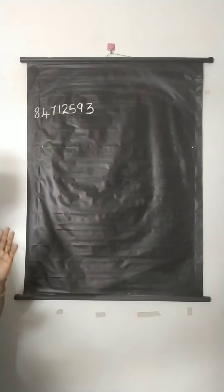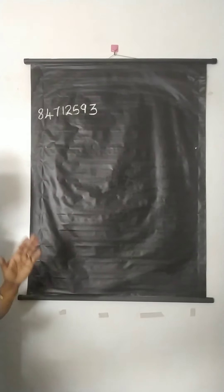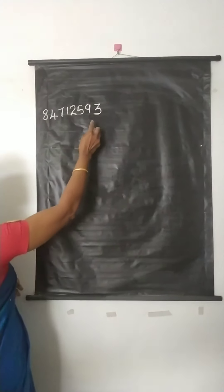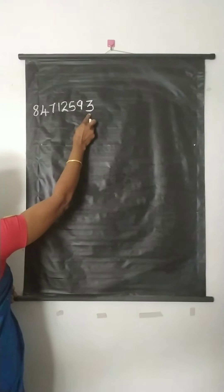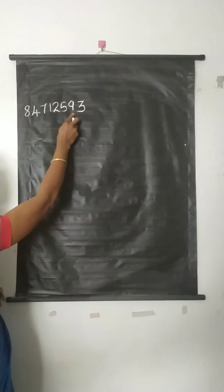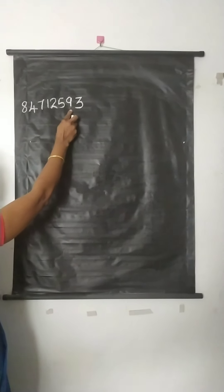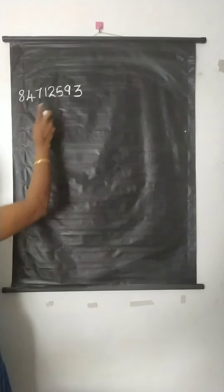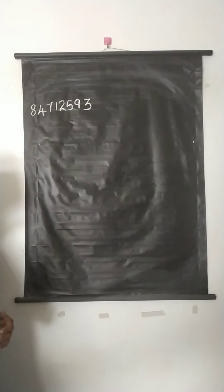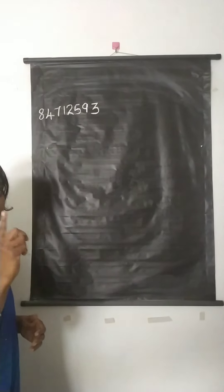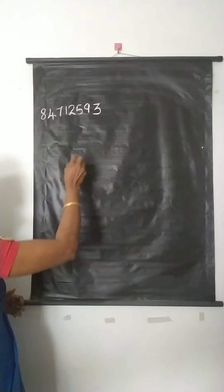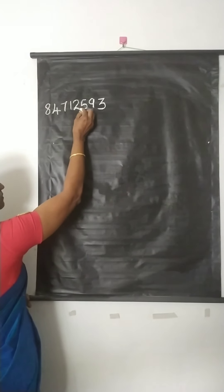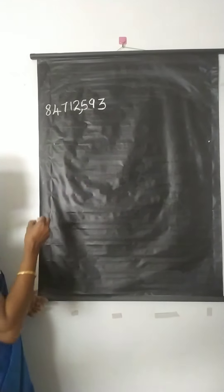The first comma comes after 3 digits from the right. The first digit from the right is 3, the second digit from the right is 9, and the third digit from the right is 5. Therefore, the first comma comes after 3 digits from the right — that is, the first comma comes in between 2 and 5.